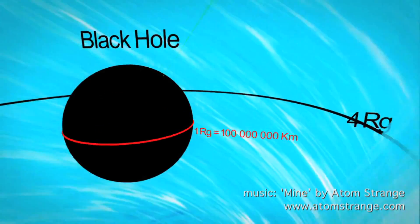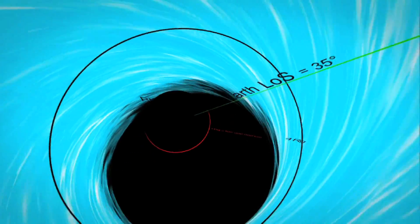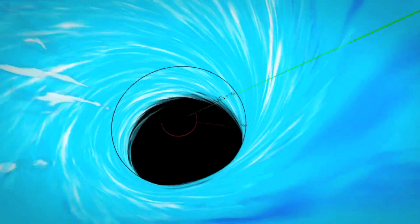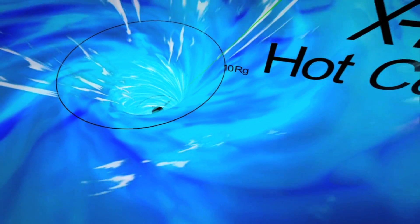Supermassive black holes at the centers of large galaxies are, by definition, some of the darkest objects in the universe. But paradoxically, they power some of the brightest lights, letting astronomers find some of the most distant galaxies.